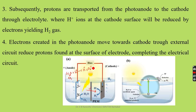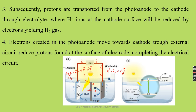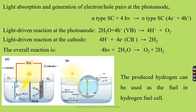The formed protons migrate towards the cathode surface. Protons are transported from the photoanode to the cathode through the electrolyte, where H⁺ ions at the cathode surface are reduced by electrons yielding hydrogen gas. The electrons created at the photoanode migrate toward the cathode through the external circuit, reducing the protons and completing the electrical circuit. Reduction takes place at the conduction band whereas oxidation is observed at the valence band.